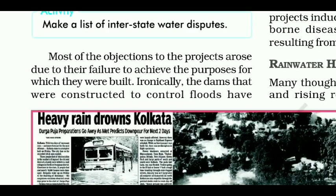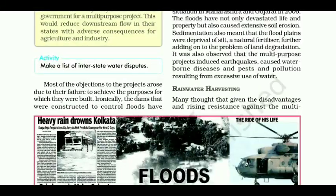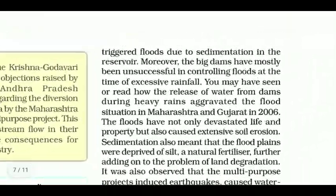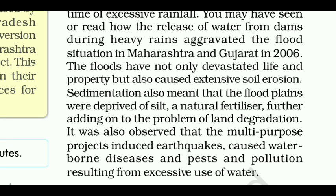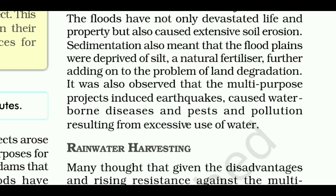Most objections to these projects arose due to their failure to achieve their stated purposes. Ironically, dams constructed to control floods have triggered floods due to sedimentation in the reservoir. The big dams have mostly been unsuccessful in controlling floods during excessive rainfall — as seen when release of water from dams during heavy rains aggravated the flood situation in Maharashtra and Gujarat in 2006. Floods devastated life and property, caused extensive soil erosion, and sedimentation deprived flood plains of silt and natural fertilizers. It was also observed that multipurpose projects induced earthquakes, caused waterborne diseases, and resulted in pollution from excessive use of water.